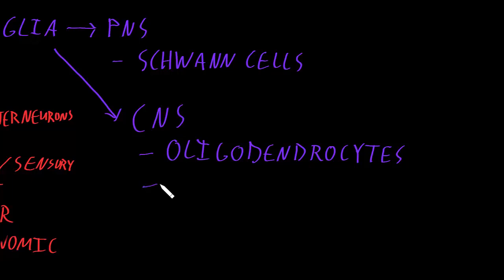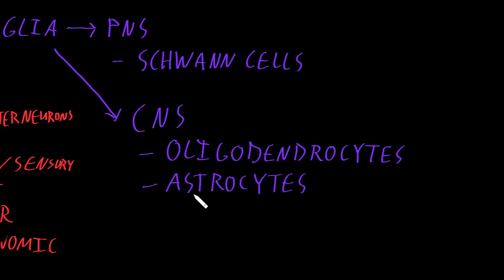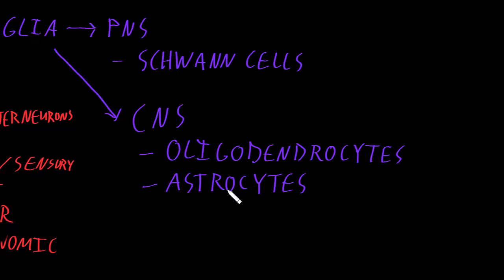The next type of central nervous system glia are called astrocytes. Astrocytes perform many jobs. They provide a lot of the structural support for CNS tissue, form scar tissue after certain kinds of injury in the CNS, and regulate the concentrations of many substances in the interstitial fluid of the CNS that are important for neuron function. Astrocytes also contribute to a barrier between the interstitial fluid of the CNS and the blood in blood vessels passing through that tissue.